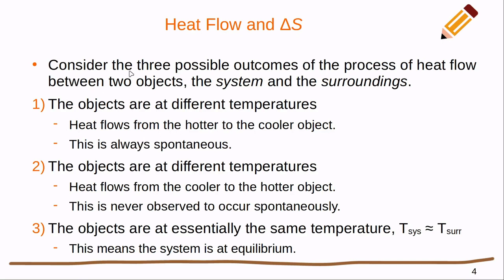To illustrate this, we're going to start with three possible outcomes of heat flow between two objects — one is going to be the system and one the surroundings. In the first scenario, the objects are at different temperatures — the system is hotter than the surroundings. We know that heat is going to flow from the hotter to the cooler object, and that this is always spontaneous. There's never a situation where one stays hotter and the other stays cooler if they're in thermal contact.